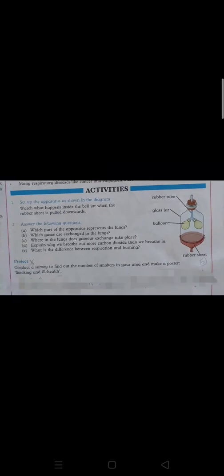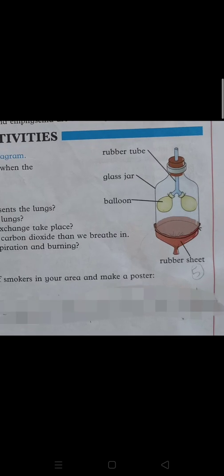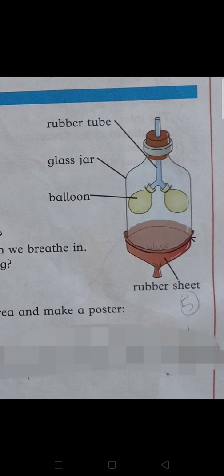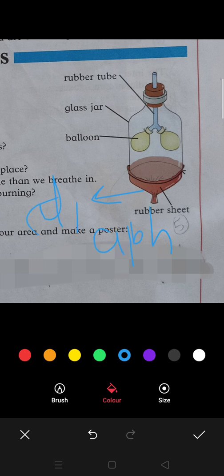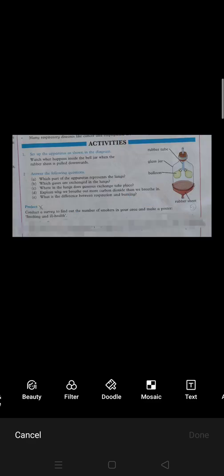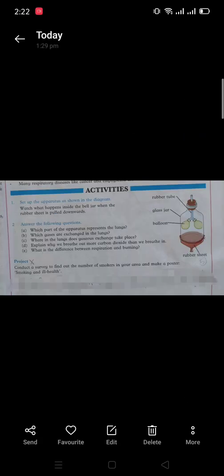These balloons are acting as your lungs. Answer the following questions after observing it. Now you have observed - here you can see he has made this diaphragm. These are lungs, both are lungs. This is trachea, these are bronchi, and this is your respiratory tract. Which part of the apparatus represents the...